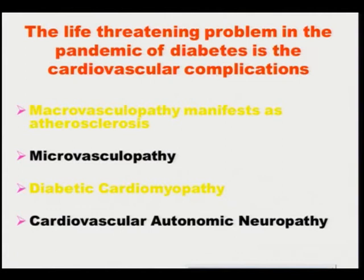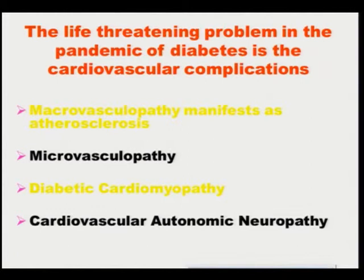The life-threatening problem in the pandemic of diabetes is the cardiovascular complications. Most of the diabetics die of a cardiovascular complication — 80 to 90 percent. Macrovascularopathy, which manifests as atherosclerosis, is the most serious problem. Other cardiovascular involvements are microvascularopathy, diabetic cardiomyopathy, and cardiovascular autonomic neuropathy.